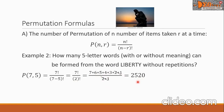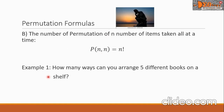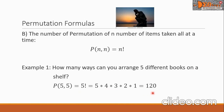Those are the 5-letter words we can form from the word LIBERTY. For formula B, the number of permutations of n items taken all at a time is P(n, n) equals n factorial. For example, how many ways can you arrange 5 different books on a shelf? This is P(5, 5), which equals 5 factorial: 5 times 4 times 3 times 2 times 1, giving 120 ways to arrange 5 different books on a shelf.